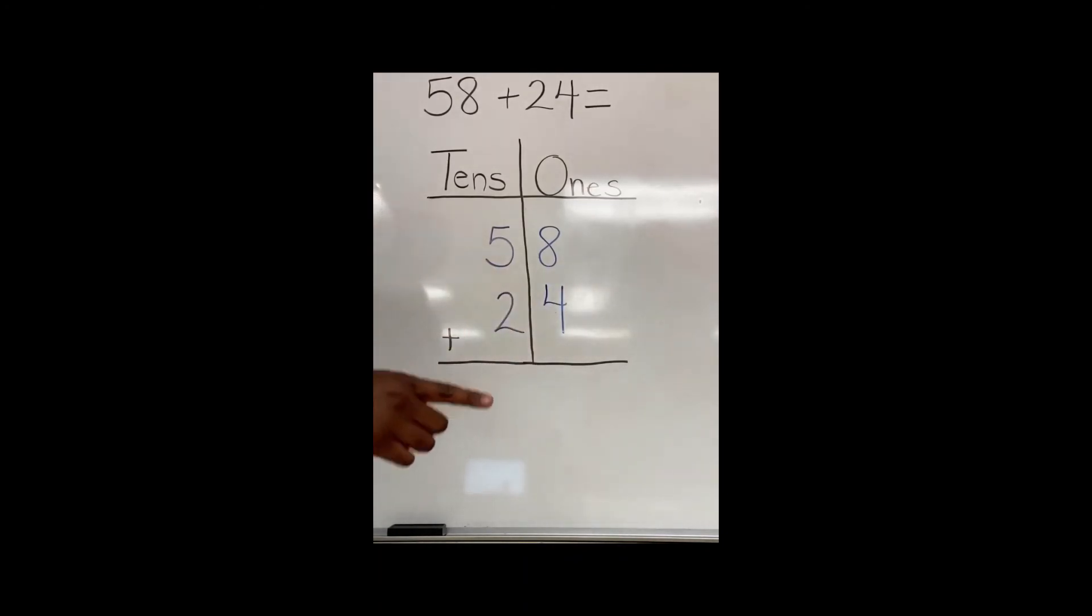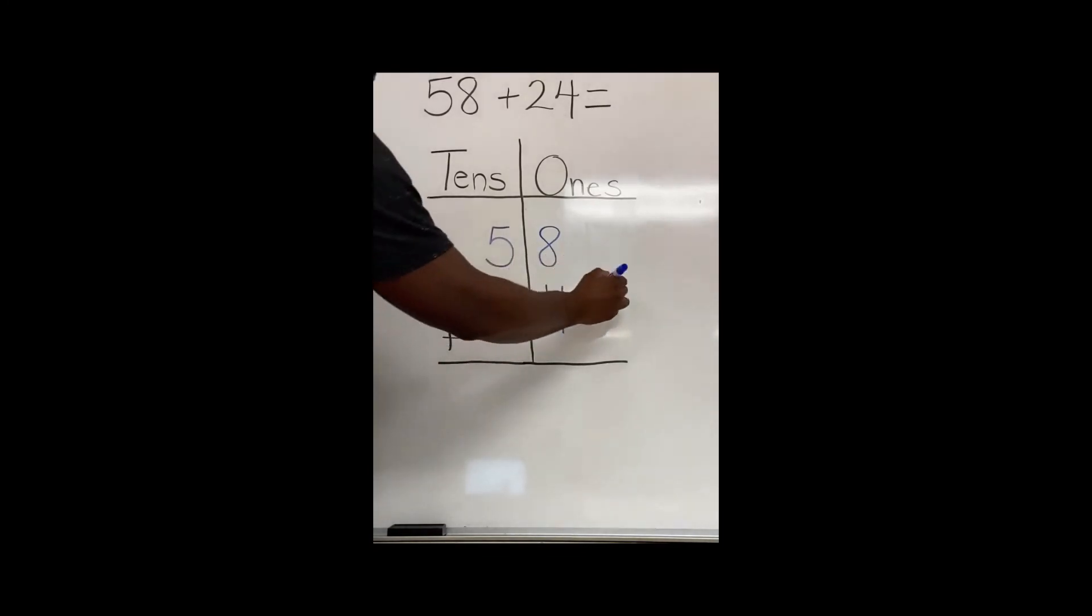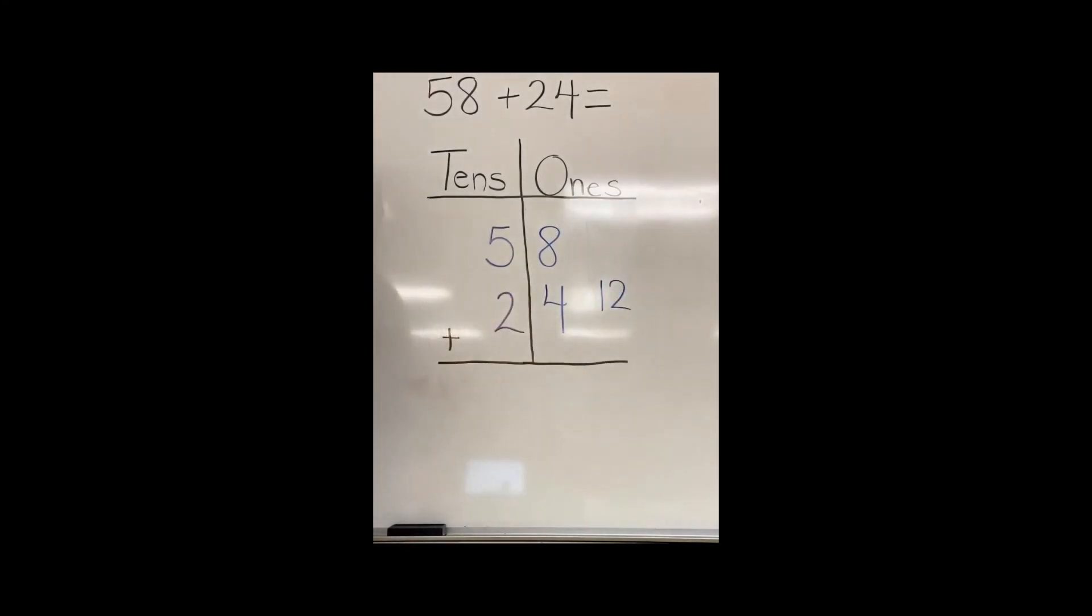My first step is to go ahead and add my ones place first. We always start on the right side. Eight plus four. Eight, nine, ten, eleven, twelve. I'll write twelve out to the side as a reminder of what my sum is.